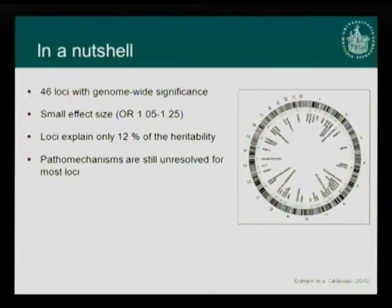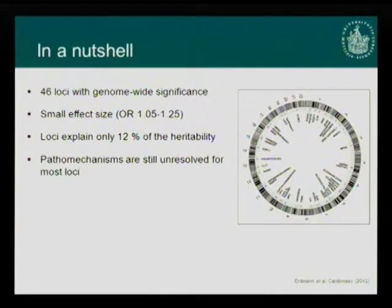To wrap up what GWAS has found during the last seven years: we now have 46 loci that we know increase the risk of coronary artery disease, but most have really small effect sizes in the range of 1.05 to 1.25. The most disappointing finding is that these loci explain only 12% of the genetic heritability, meaning 90% is still left to be identified and most pathogenic mechanisms remain unresolved.